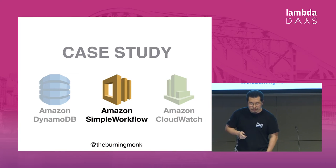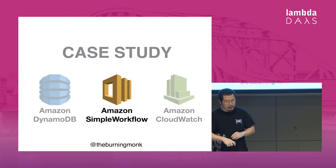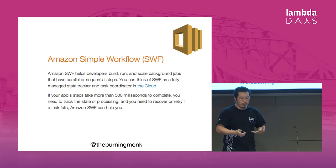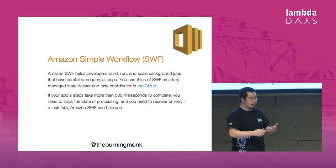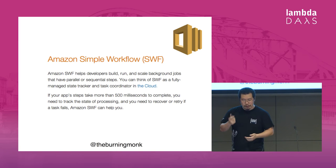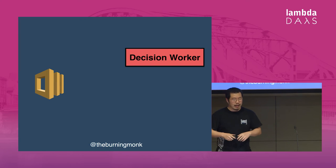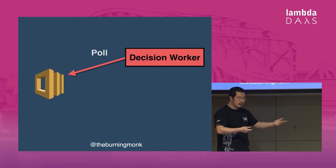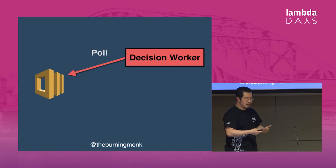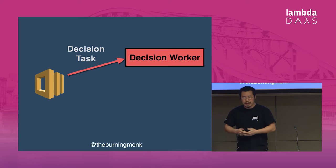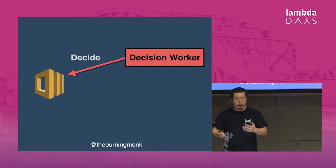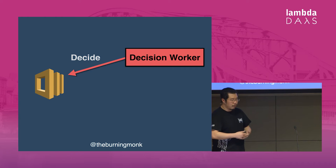Moving on to another service called Amazon Simple Workflow, which is an orchestration workflow service that helps you manage the state of a particular workflow and gives you support for retrying and monitoring. The way it works is that you write your own decision workers, you poll the service for work, and what you get back is called a decision task, which contains the current state of the workflow as well as the events that have occurred so far. Your decision worker then decides what happens next in the workflow.